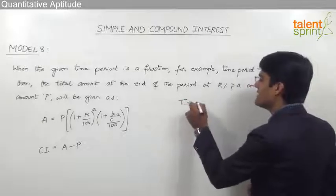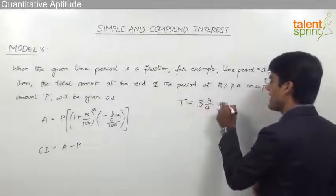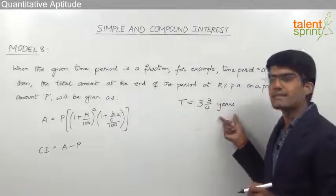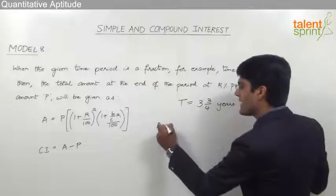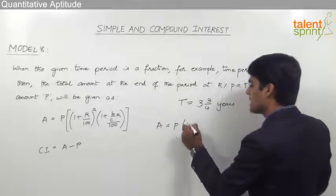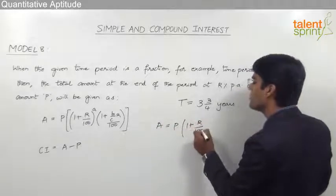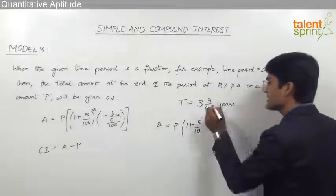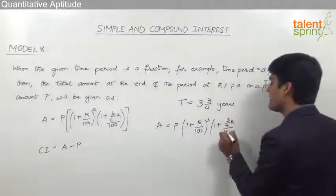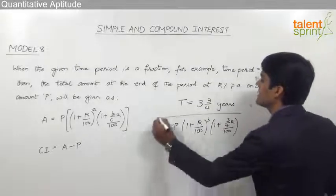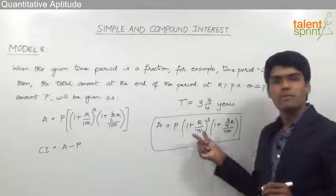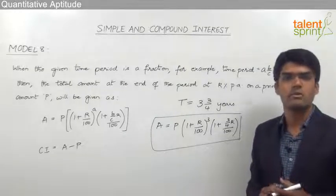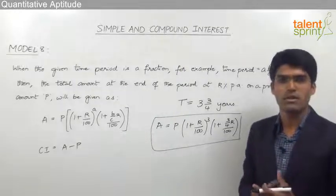For example, if the given time period is 3¾ years — that is 3 complete years and ¾ of a year — the total amount can be taken as P × (1 + r/100)^3 × (1 + (3/4) × r/100). From this we find the amount, and subtracting the principal gives the required compound interest.